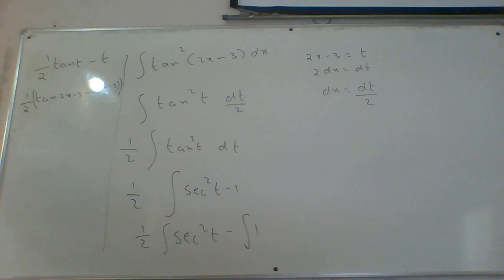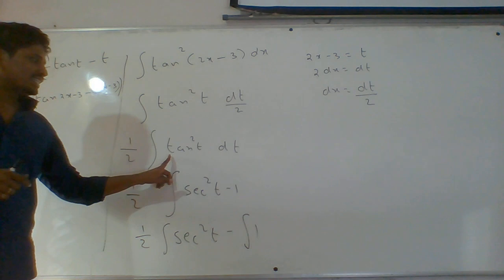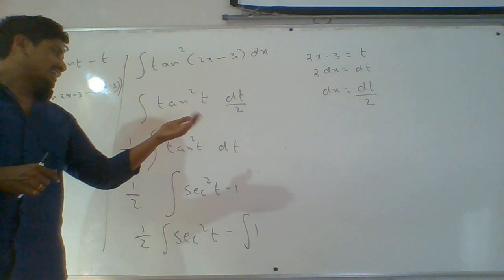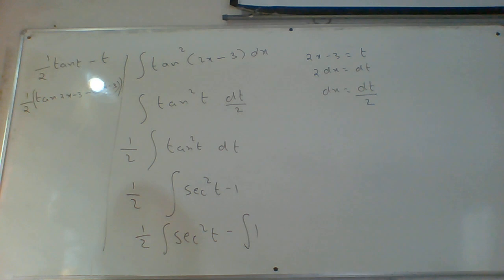The trigonometric formula used: tan square theta equals sec square t minus 1, derived from sec square t minus tan square t equals 1.